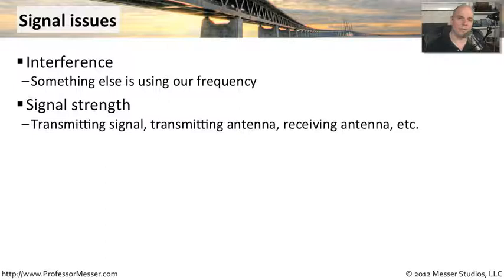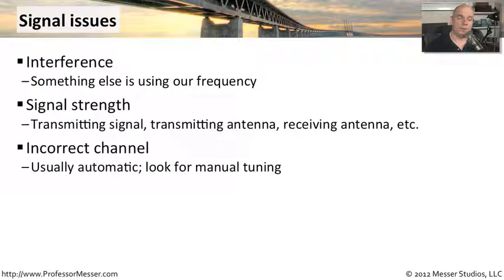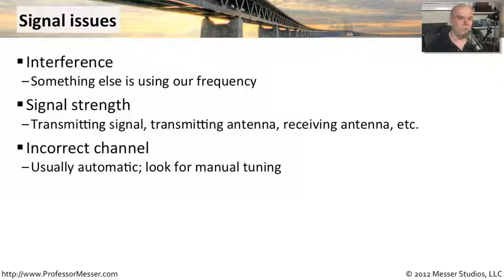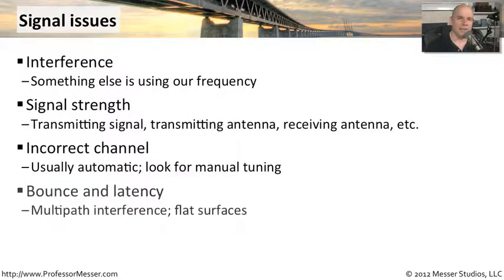Every single one of those has an impact on the signal strength itself. We also have to think about the channels we're using. In a wireless network, you have a number of channels available, and occasionally a system may have been manually configured to use the incorrect channel, resulting in very poor performance, no throughput, or no connection at all. That's another type of signal issue we have to keep in mind.